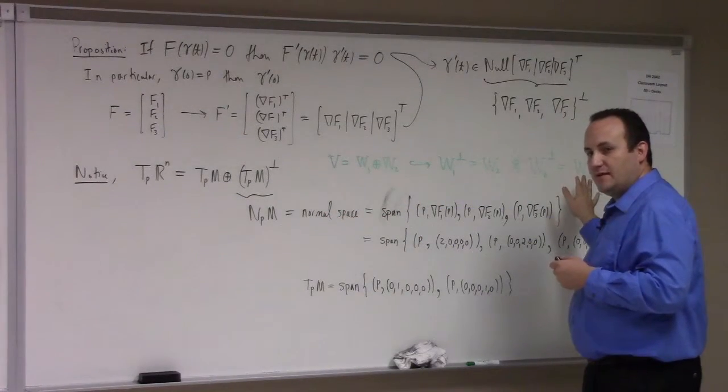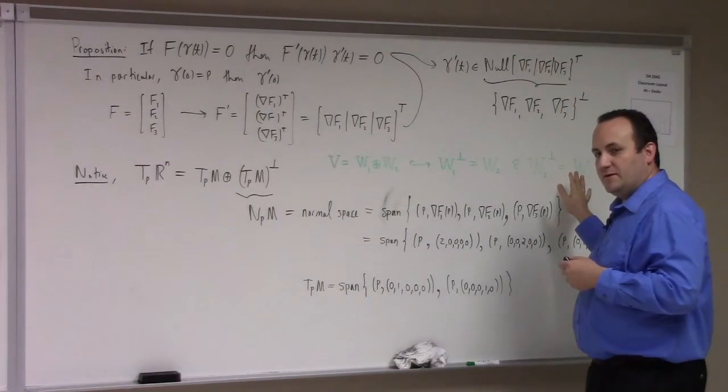Normal space. Span of the gradient vectors. But then what? How do you find the tangent space?